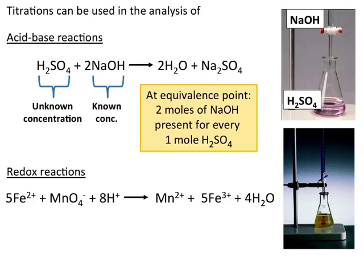In this example I have sulfuric acid and sodium hydroxide. If you have sodium hydroxide where you know the concentration of it — which typically requires a separate experiment that you do first to figure out the concentration of your sodium hydroxide — then once you know that, you can use it to find an unknown concentration of sulfuric acid. At your equivalence point of this balanced equation, you've added two moles of sodium hydroxide for every one mole of sulfuric acid, and you can use solution stoichiometry to figure out just how much sulfuric acid you have in terms of concentration.